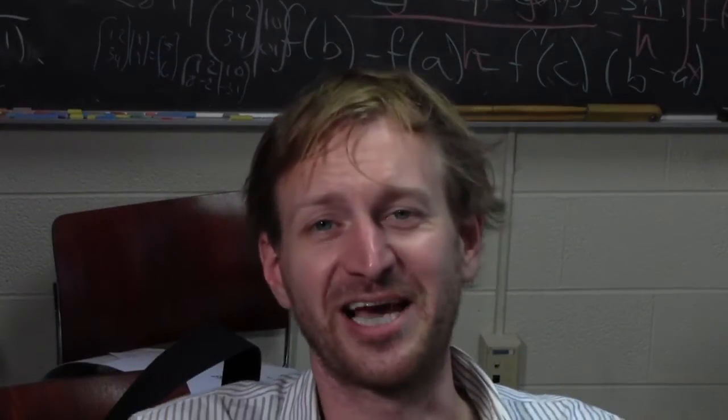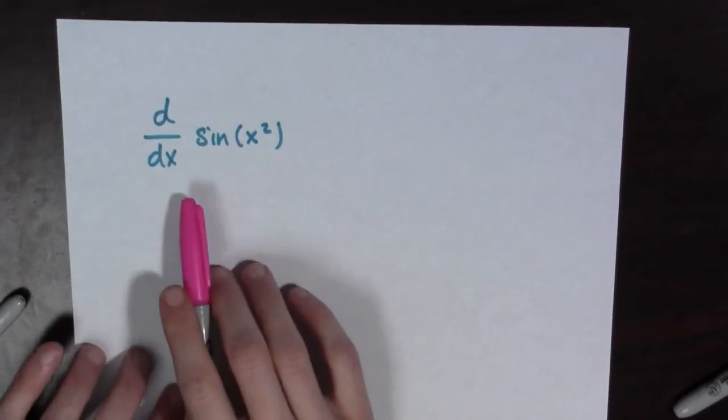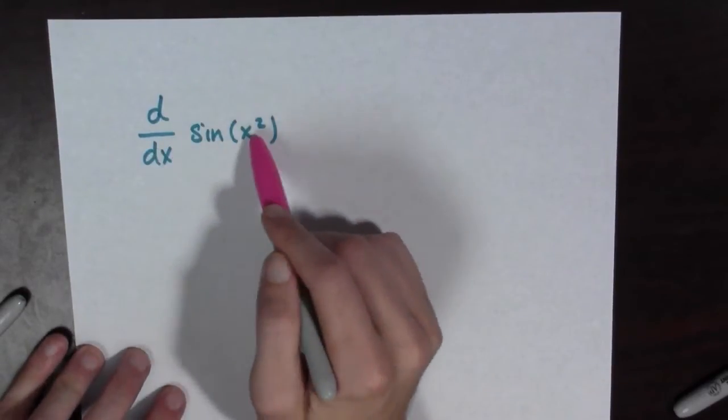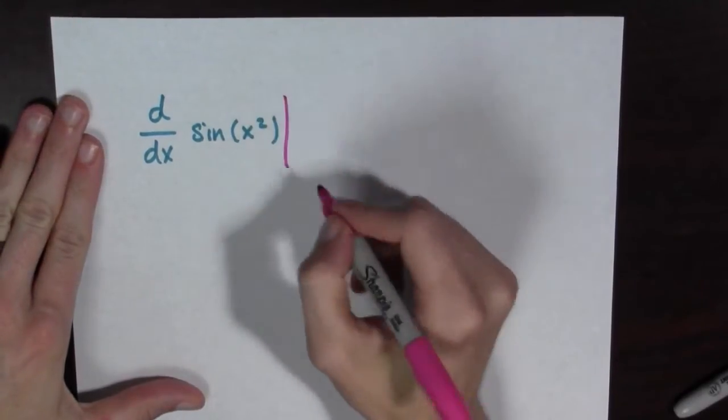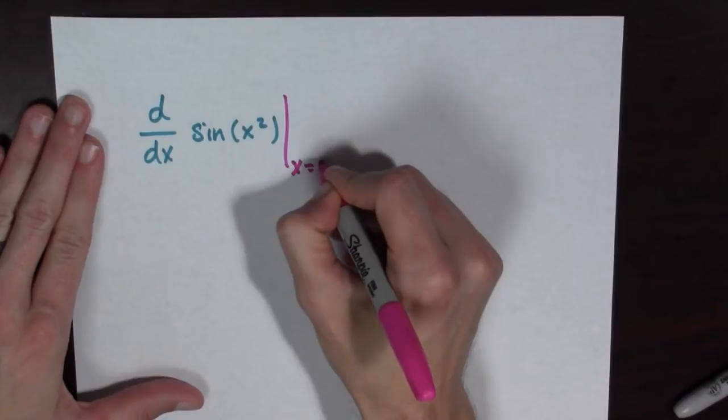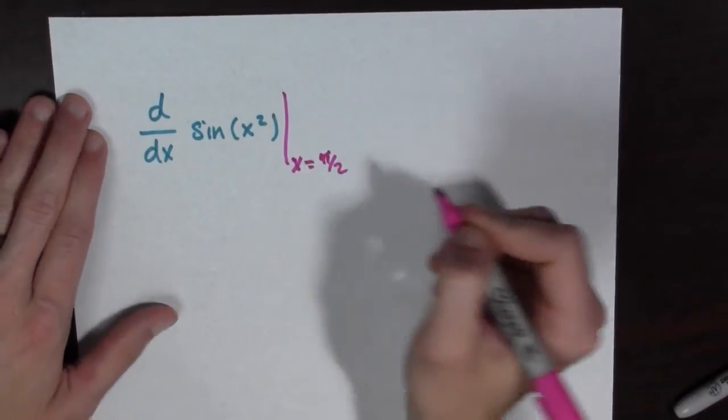Let's see another example. We also get into trouble when we're looking at the derivative with respect to x of sine x squared. Check this out. If I take this derivative and if I evaluate it at x equals, say, pi over 2,